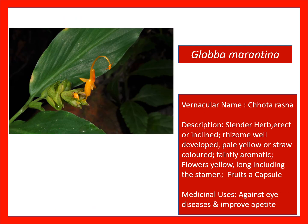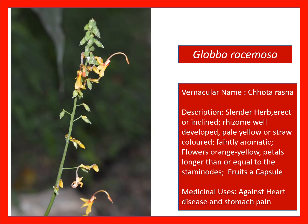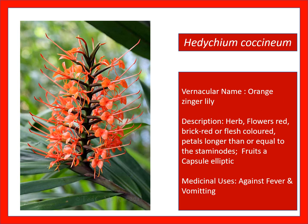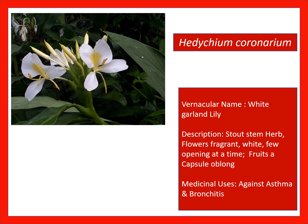Globba marginata — against eye disease and to improve appetite. Globba racemosa — against heart disease and stomach pain. Hedychium coccineum — against fever and vomiting; it is orange ginger lily. Hedychium coronarium — a common ornamental plant, also called wild ornamental plant or white garland lily — against asthma and bronchitis.